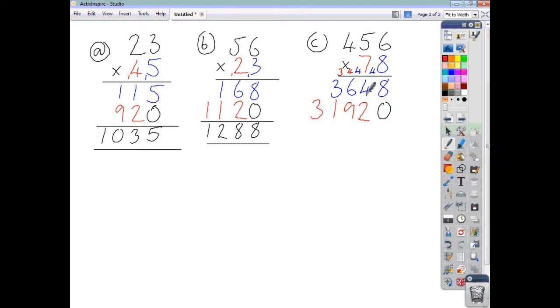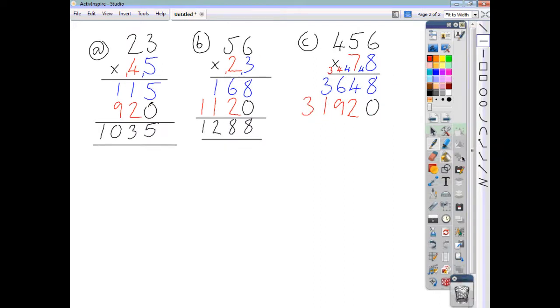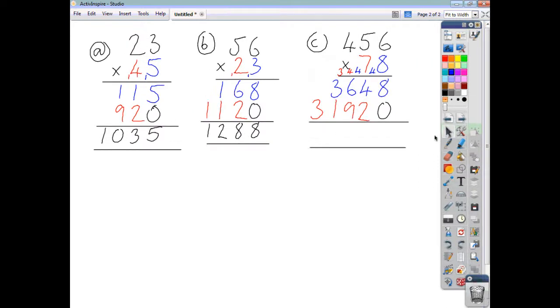Now, keep your units, tens, hundreds, thousands. Keep everything in line in case you end up making a mistake. Now we're ready to add everything up and we'll get our final answer. So 8 add 0 is 8, 4 add 2 is 6, 6 add 9 is 15, write the 5, carry the 1. 3 add 1, add 1 is 5.